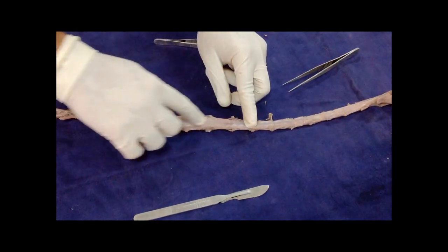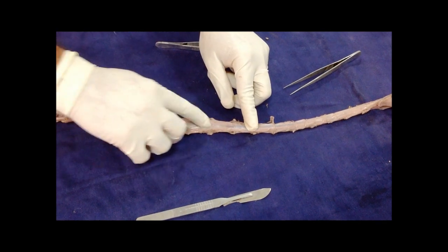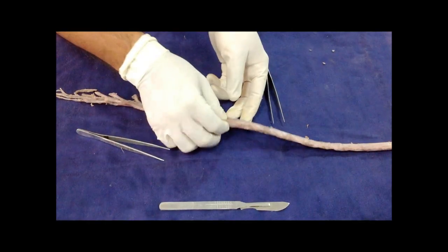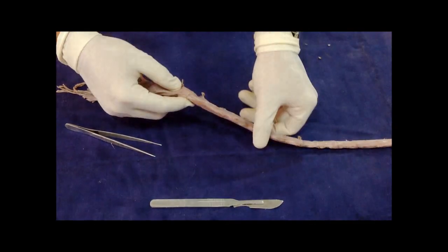As we move down the spinal cord, the lower end of spinal cord is conical. Somewhere here we get the lower conical end of spinal cord and that is called conus medullaris.